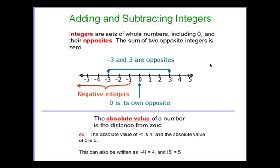Throughout Chapter 1, we spent the majority of our time examining different strategies for relating algebra to real life. However, we limited our study to the group of numbers that we refer to as whole numbers. In other words, we didn't deal with integers or negatives at all. Throughout Chapter 2, we're going to begin to deal with the other side of the number line, the other side of zero, those negative numbers.